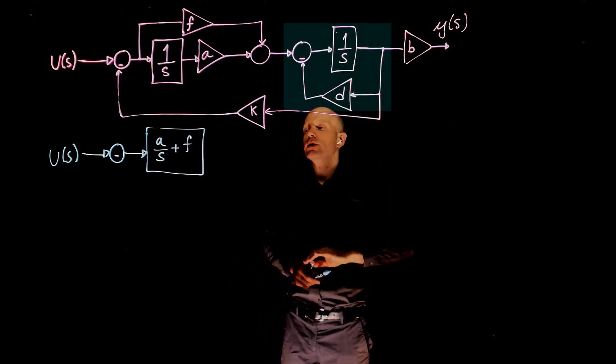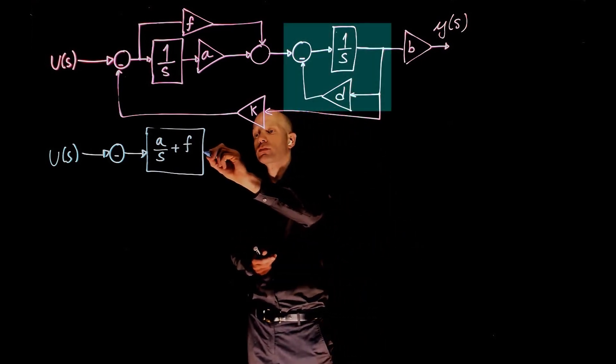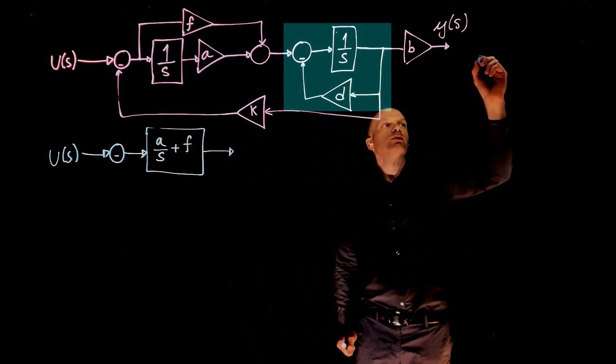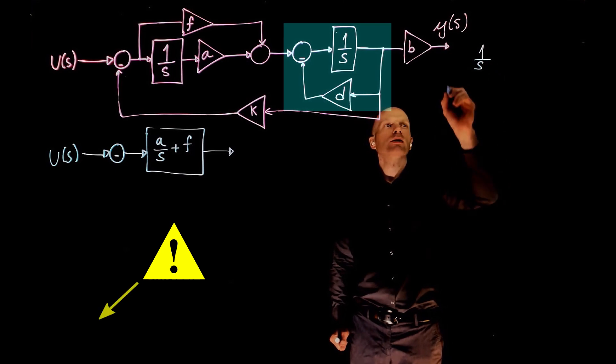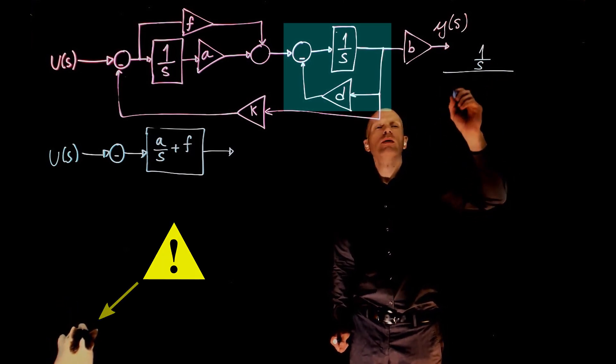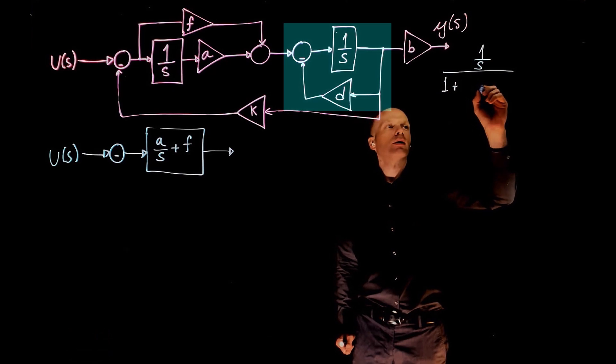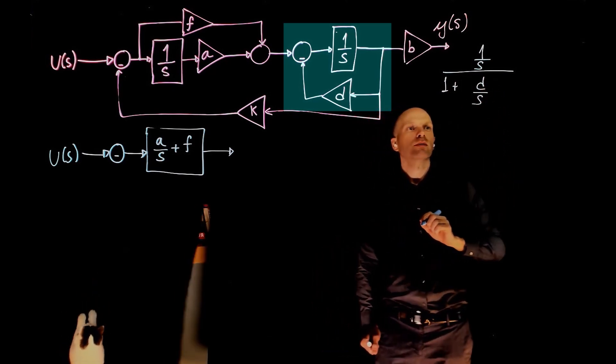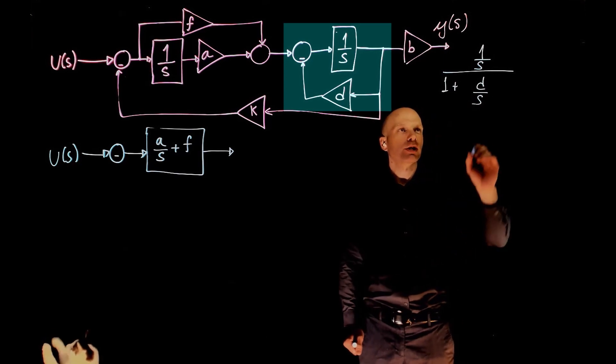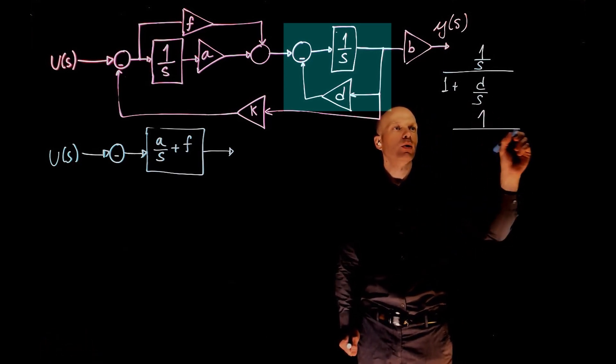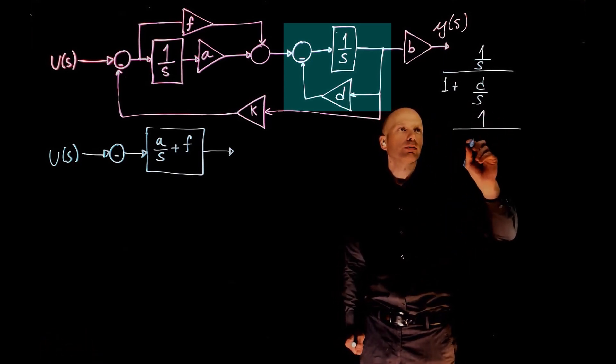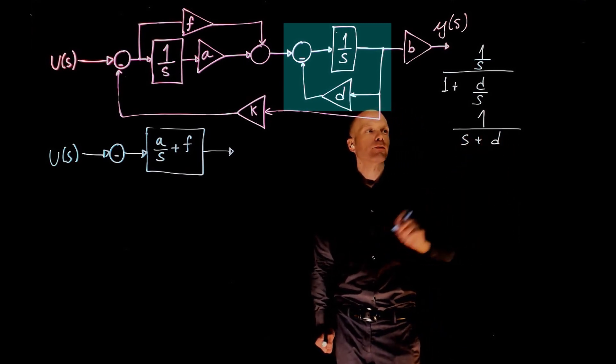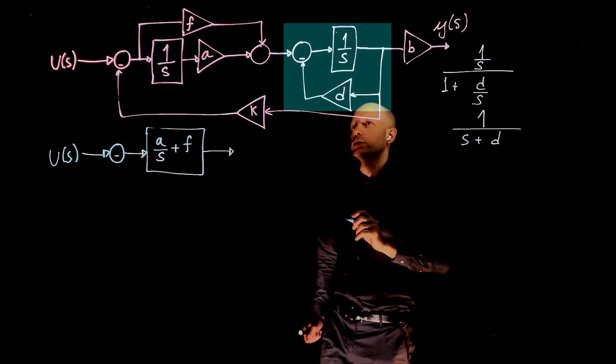Now moving to this feedback loop, this is a simple feedback loop to simplify. This would be 1 over s over 1 plus d over s. And after some simple manipulation here, we'll see that this simplifies to 1 over s plus d. If you find the common denominator, s will cancel.